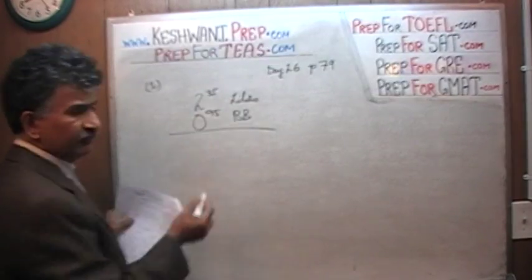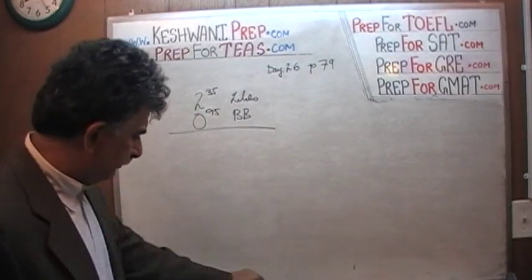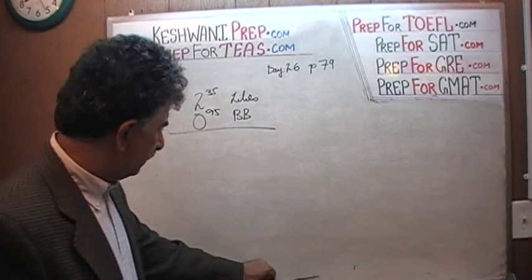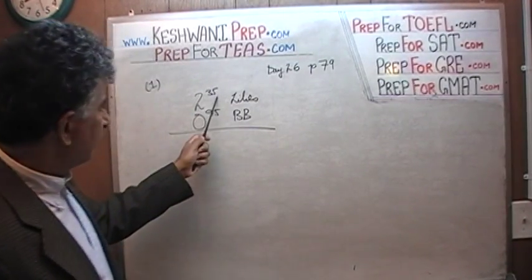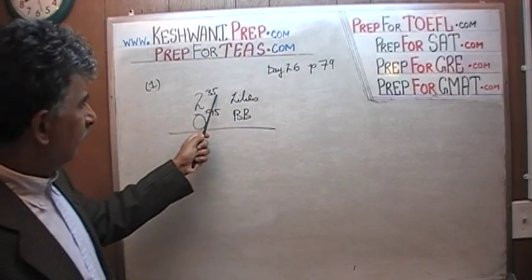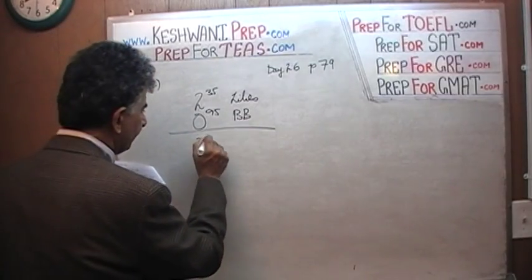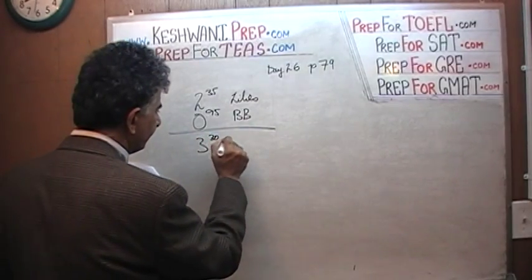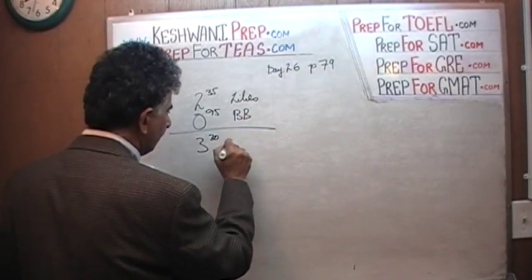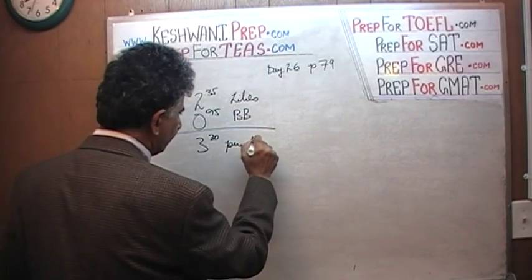$0.95. 95 plus 5 is $1. So it's $3.30 — $3.30 per item.